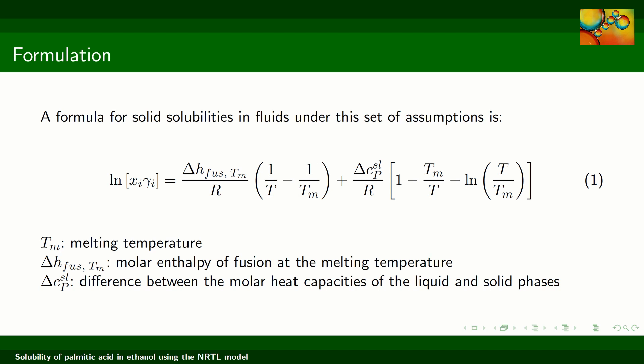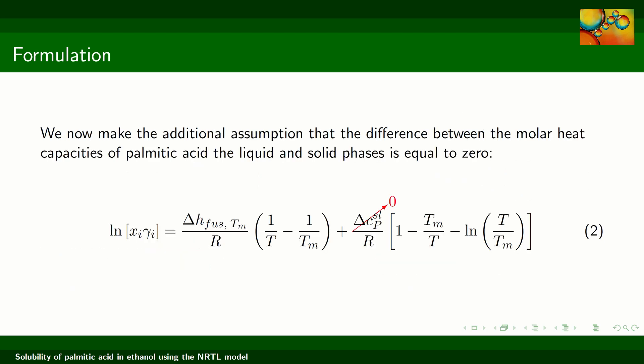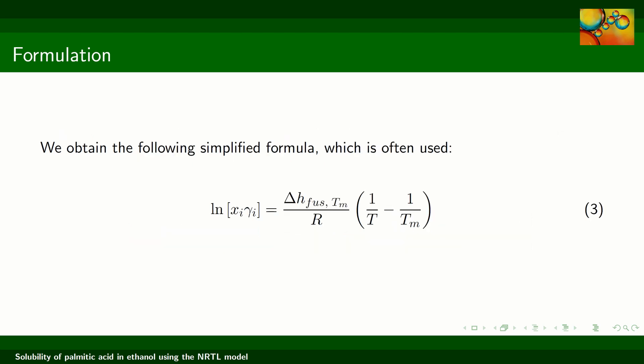A formula for solubility in fluids under this set of assumptions appears as equation number one. On the left-hand side we see the natural logarithm of the mole fraction and of the activity coefficient of palmitic acid. The right-hand side depends on the melting temperature, the molar enthalpy of fusion, and the difference between molar heat capacities in the liquid and solid phases. If we assume that this difference in molar heat capacity is negligible, the delta Cp term cancels out — this approximation is very commonly used in solid-liquid equilibrium calculations — leading to the simplified solubility equation shown as equation number three.